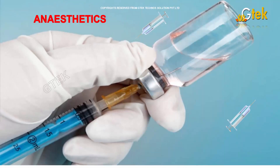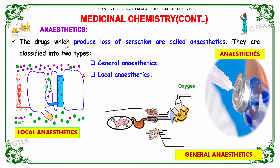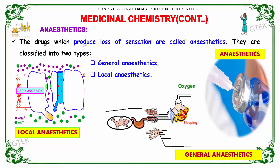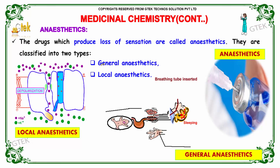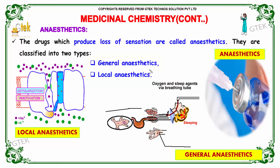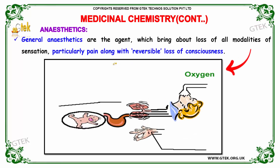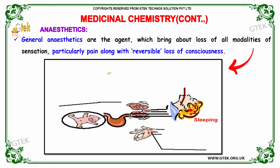Anesthetics are drugs which produce loss of sensation. They are generally classified into two types: general anesthetics and local anesthetics. General anesthetics are agents which bring about the loss of modalities of sensation, particularly pain, along with reversible loss of consciousness.